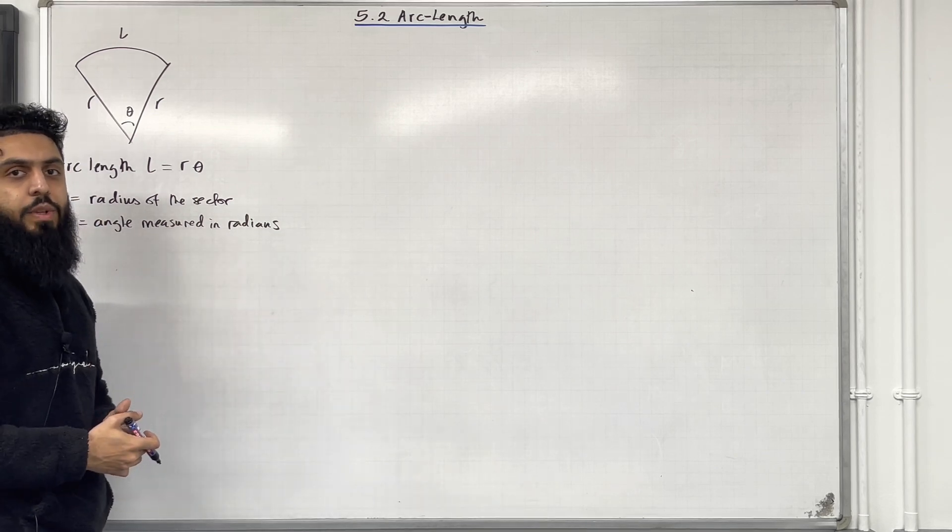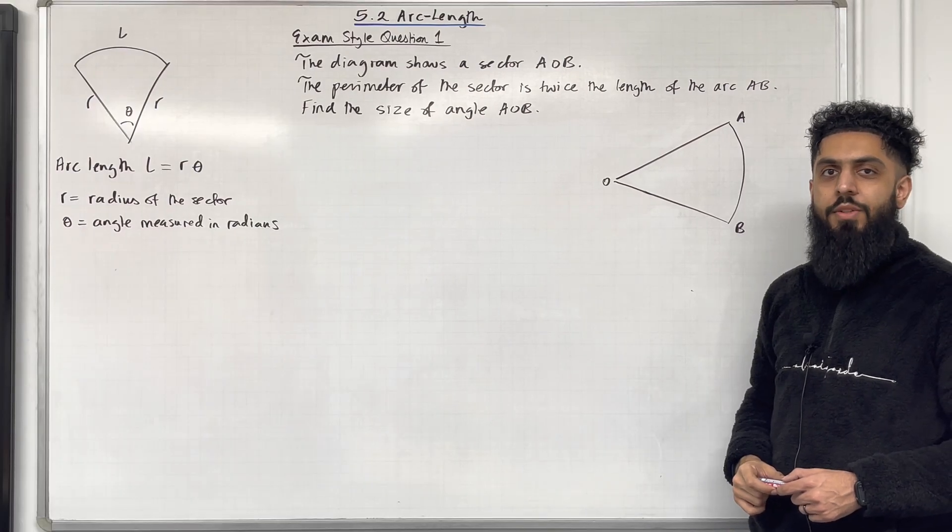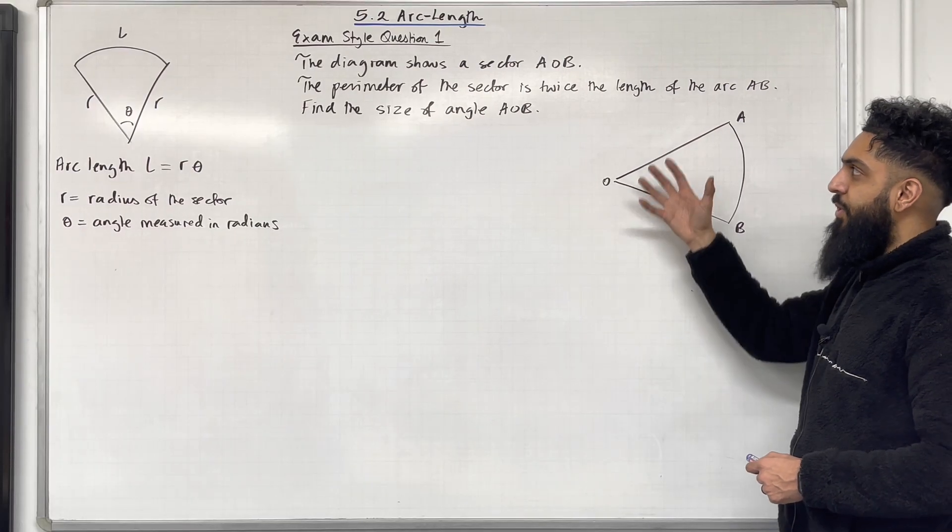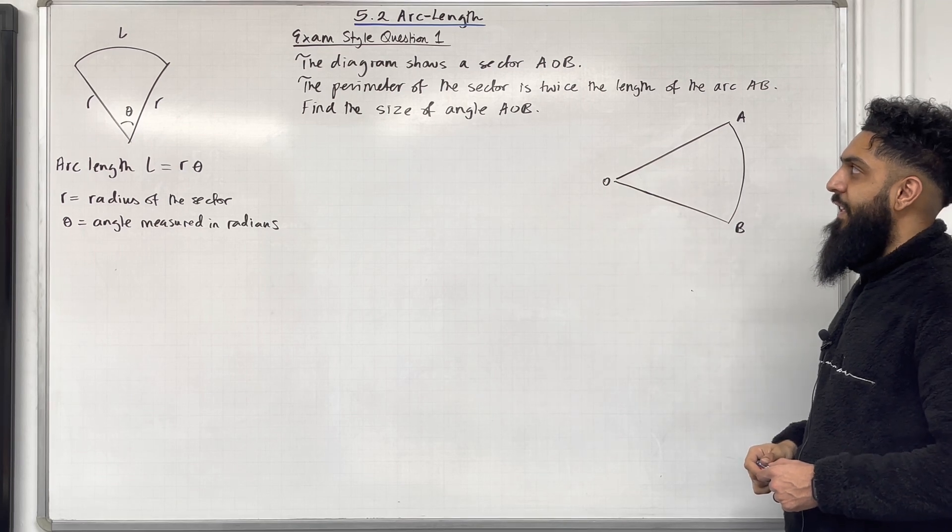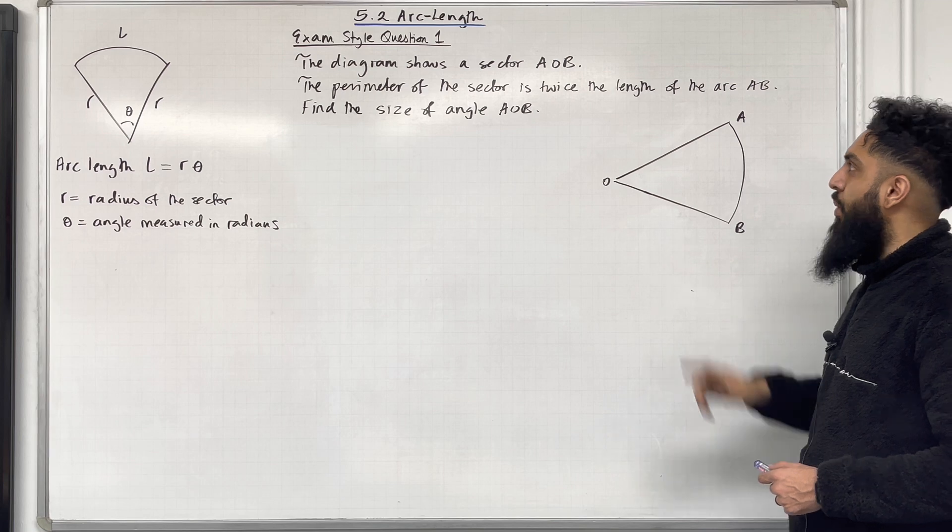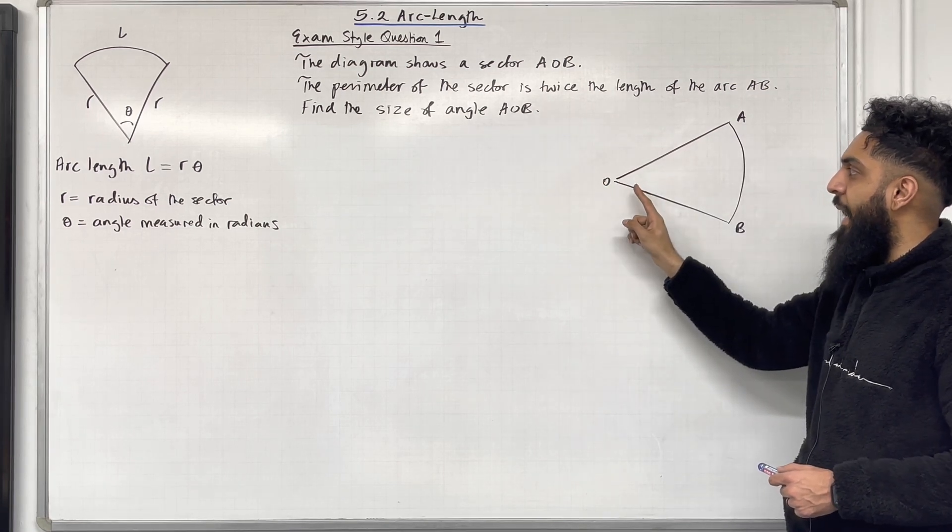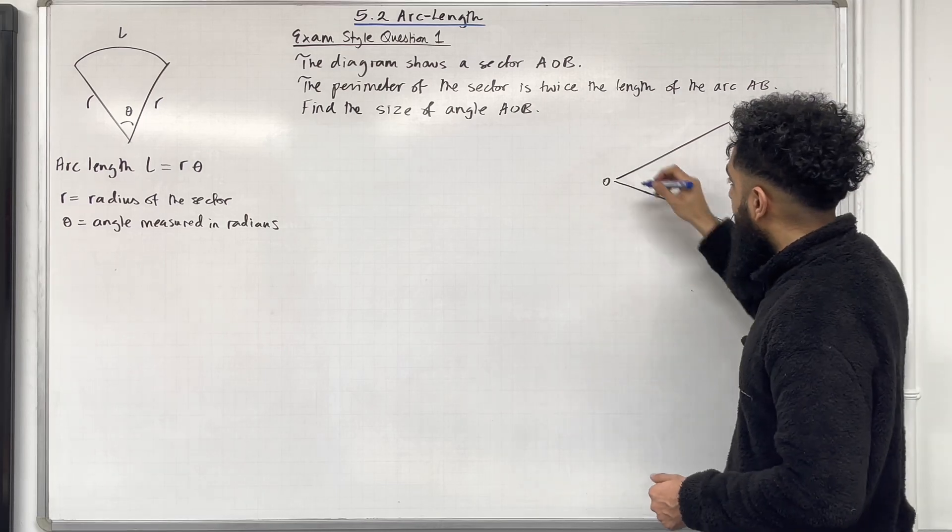I'll be implementing this key fact within exam style questions. Let's have a look at exam style question 1. The diagram shows the sector AOB. The perimeter of the sector is twice the length of the arc AB. Find the size of the angle AOB. We are trying to work out this angle. Let's call this angle theta.